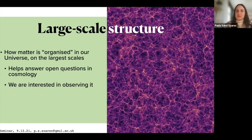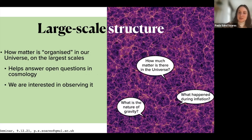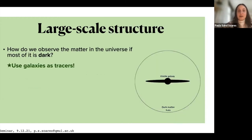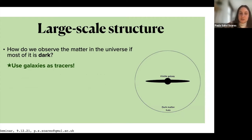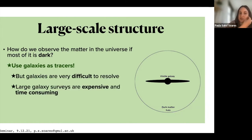First the motivation: we're very interested in observing the large scale structure — how matter is organized on larger scales. This helps us answer a lot of open questions in cosmology, such as how much matter is there in the universe, what happened during inflation, and what is the nature of gravity. A great way of doing this is using galaxies, because most of the matter in the universe is dark so we can't see it. We can use galaxies as tracers, which is great, but it can be expensive to resolve each individual galaxy, so making really large surveys can be very time consuming.